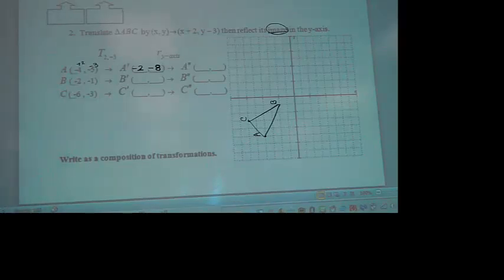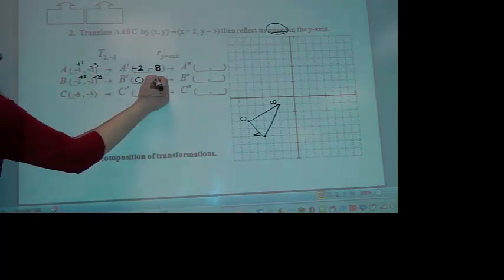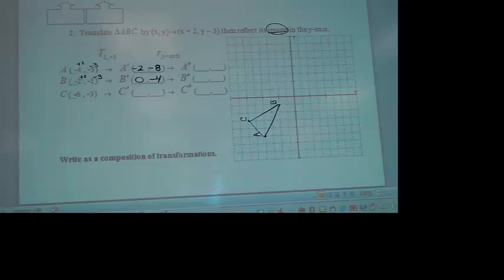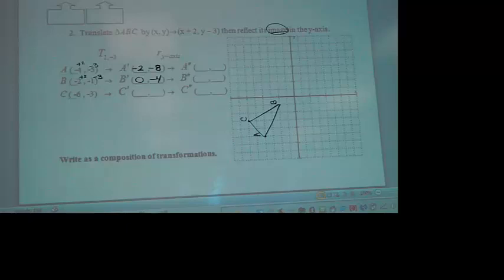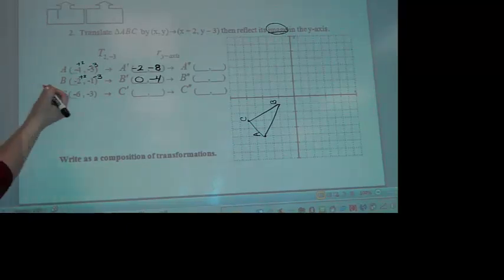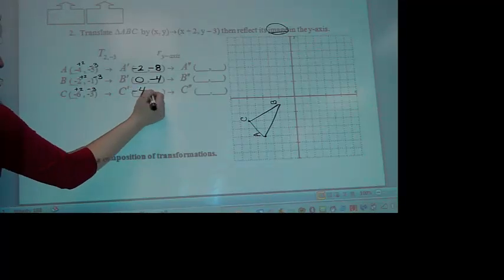Jake, what'd you get for B prime? 0, negative 4. Add 2, take away 3. Yep, this is the sign numbers coming back. So remember in algebra, some people really hated doing these pluses and negatives and all that kind of stuff. This is the return of them. Jordan, what'd you get for C prime? Negative 4, negative 6. That looks good.